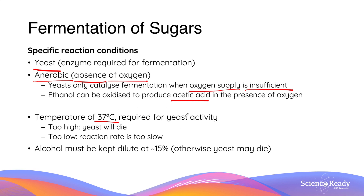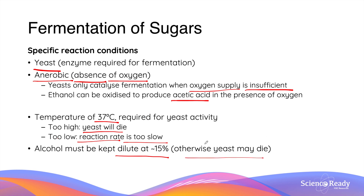Fermentation also requires a specific temperature of 37 degrees Celsius, due to the optimal temperature required for the enzymatic activity of the yeast. If the temperature is too high the yeast will die, and if it is too low the reaction will be too slow, so a fine balance is required. Lastly, the alcohol in the final mixture must be kept dilute at less than or around 15% by volume, because exceeding this may damage the yeast cells and cause them to die, preventing fermentation from occurring.